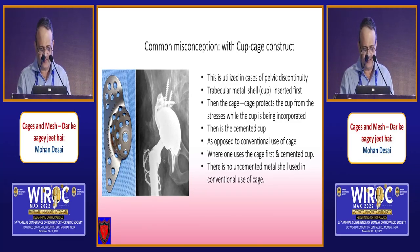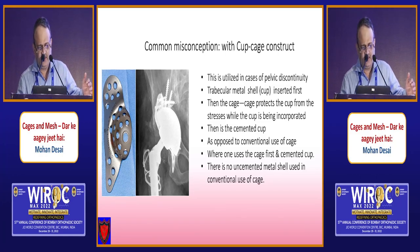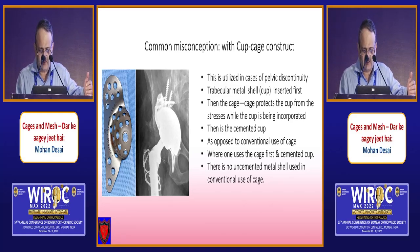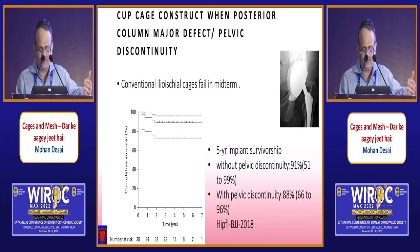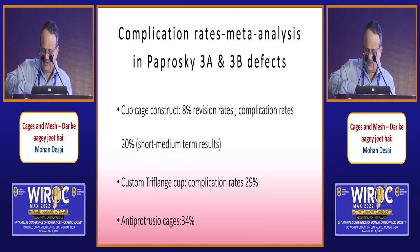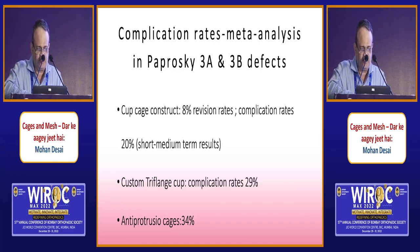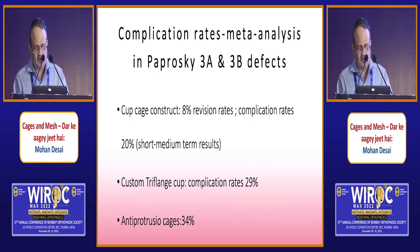An interesting concept is the cup-and-cage construct — different from conventional cages. A trabecular cup is placed first, over which the cage is laid. The cage offloads stresses on the cup while it is being incorporated. Options include full cup-cage or half cup-cage constructs. Survival rate: without pelvic discontinuity approximately 91%, with discontinuity approximately 88%. The complication rate for cup-cage constructs is around 20% with an 8% revision rate, compared to 29% for custom triflange cups.